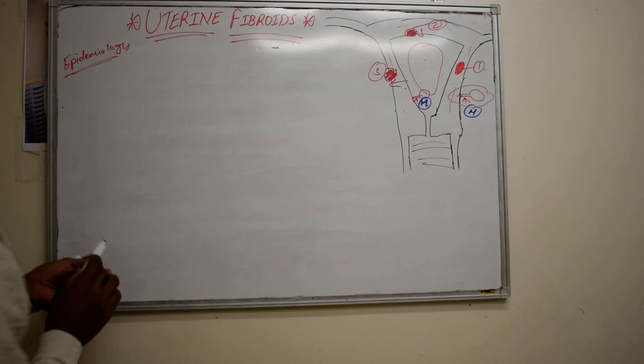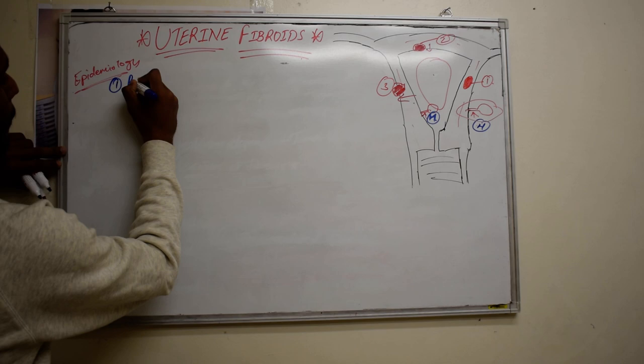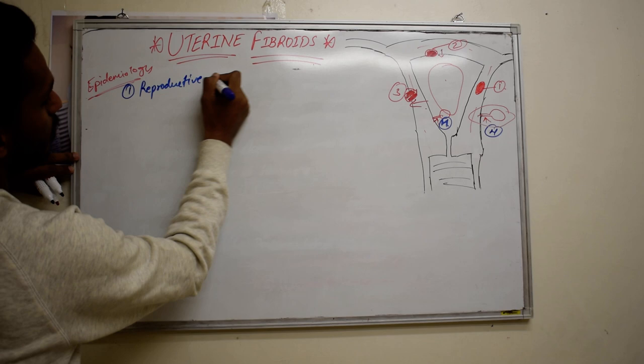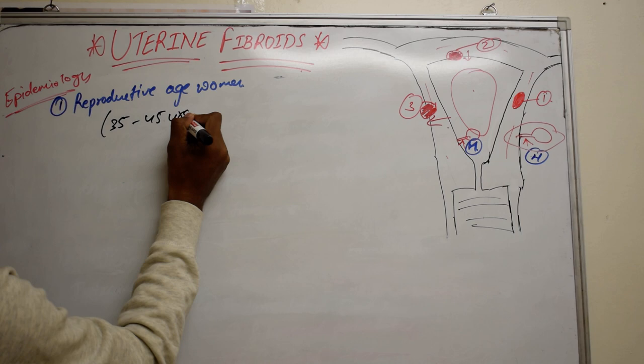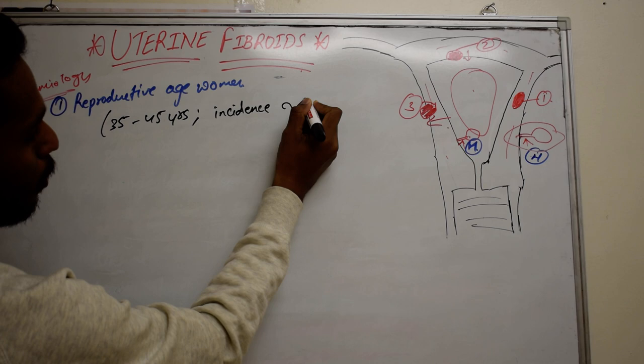Uterine fibroids are most commonly seen in women of reproductive age, particularly in the age group of 35 to 45 years, where the incidence rate is approximately 40%.